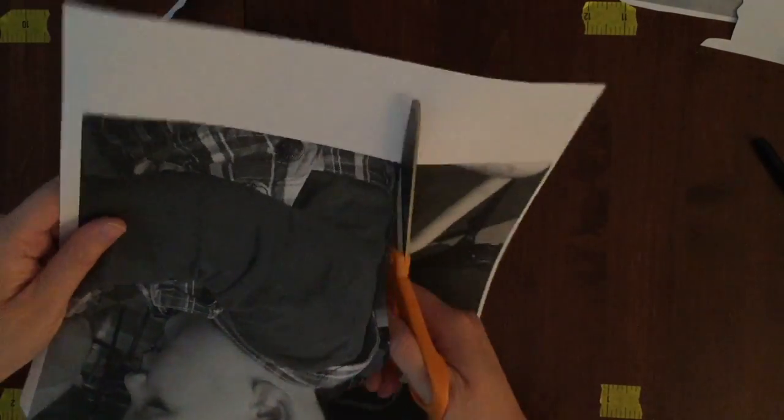The next thing you're going to want to do is bubble or rough cut your photo. Take a pair of scissors and cut around your photograph, leaving a small margin of paper.